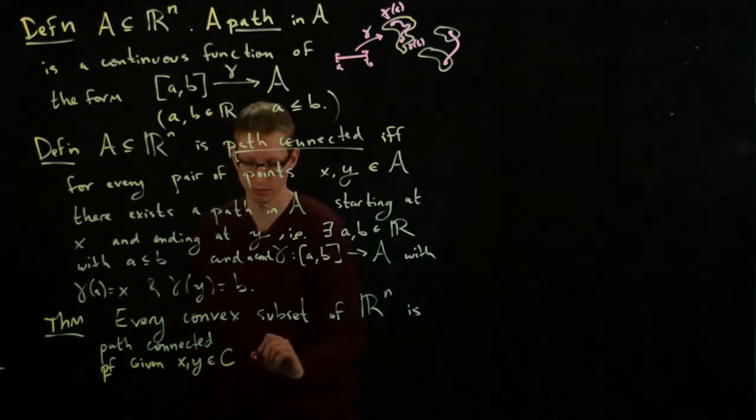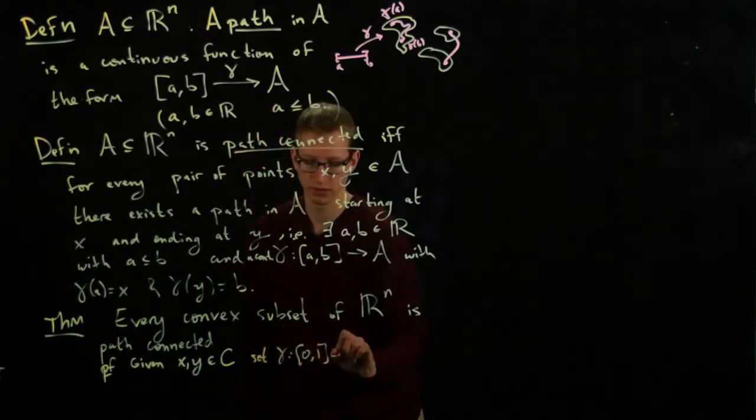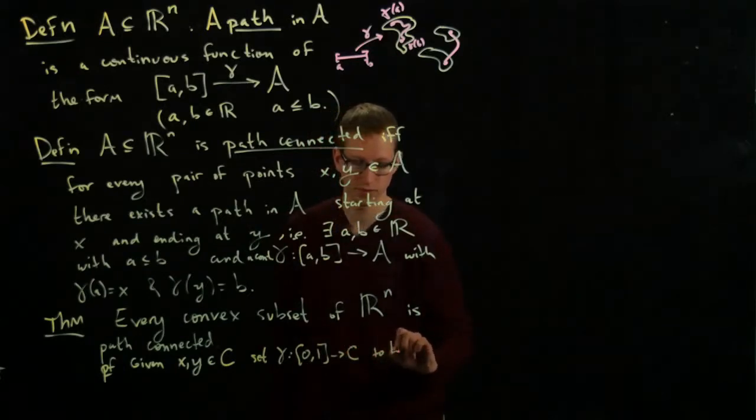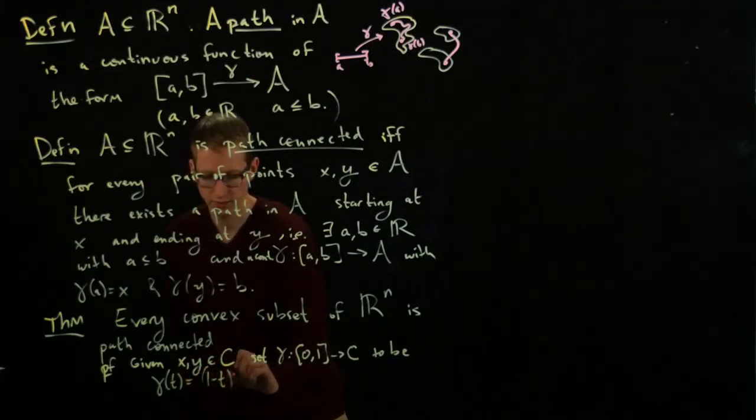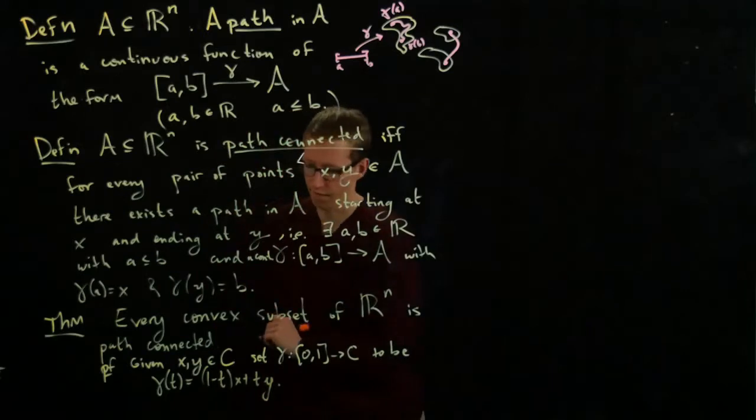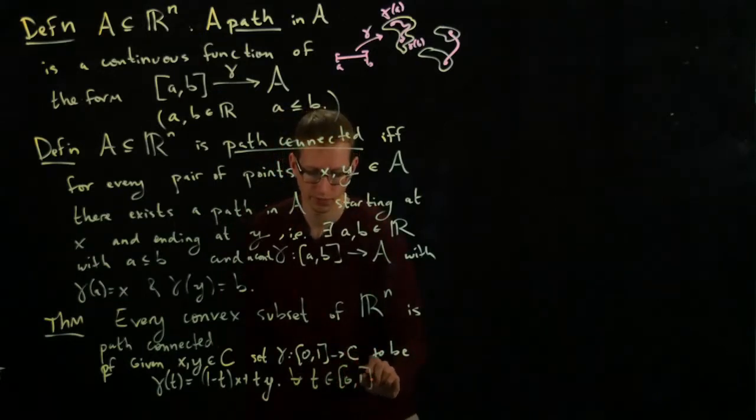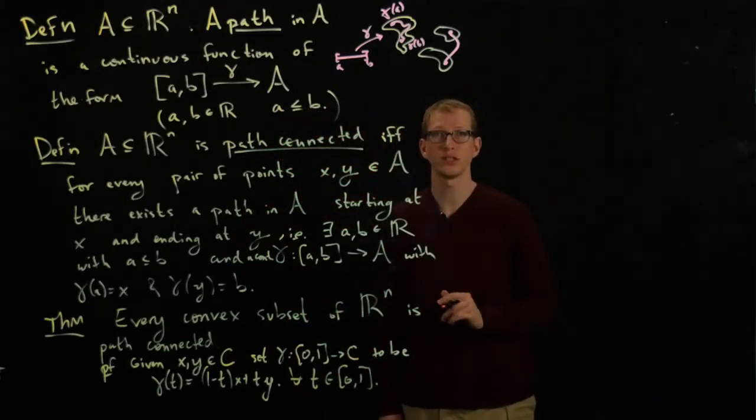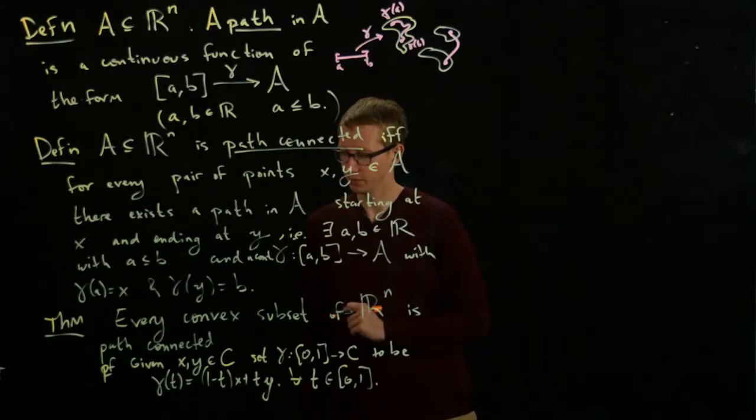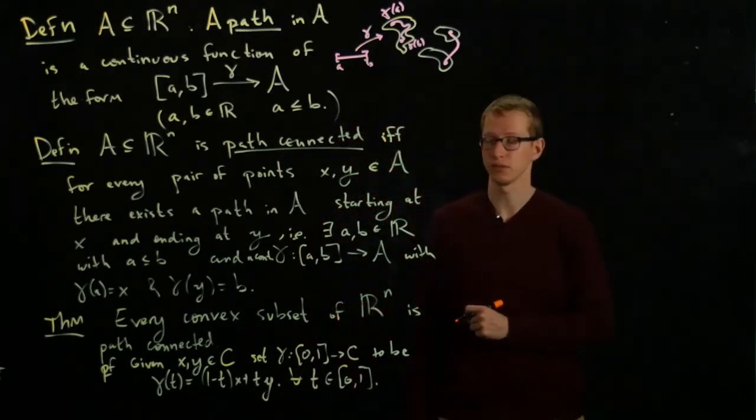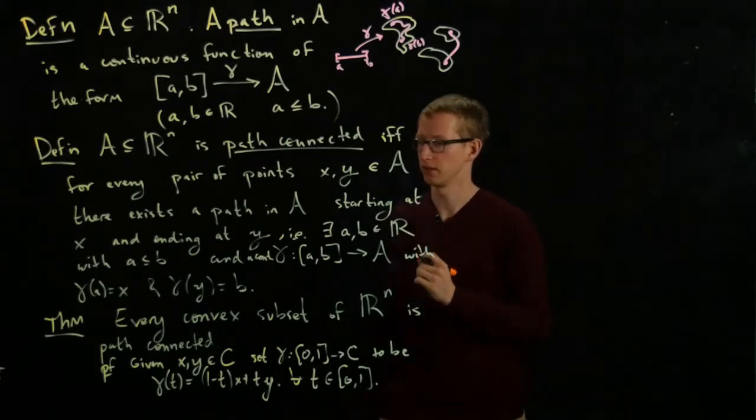So we should say, let C be the convex subset at the beginning. Set gamma from [0,1] to C to be the function gamma of t equals (1 minus t)x plus ty for all t between 0 and 1. This is an example of a continuous function - that's something you should check. And this is the straight line path. That comes for free from the definition of what it means for C to be convex.